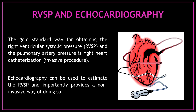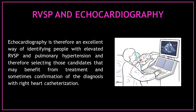Now let's talk about right ventricular systolic pressure and echocardiography. The gold standard way of obtaining the right ventricular systolic pressure and the pulmonary artery pressure is right heart catheterization, which is an invasive procedure. Echocardiography can be used to estimate the right ventricular systolic pressure and provides a non-invasive way of doing so. Echocardiography is therefore an excellent way of identifying people with elevated right ventricular systolic pressure and pulmonary hypertension, selecting candidates that may benefit from treatment and confirmation of the diagnosis with right heart catheterization.